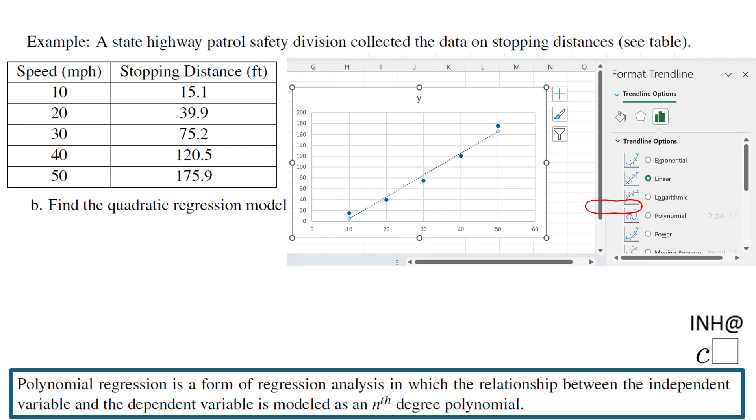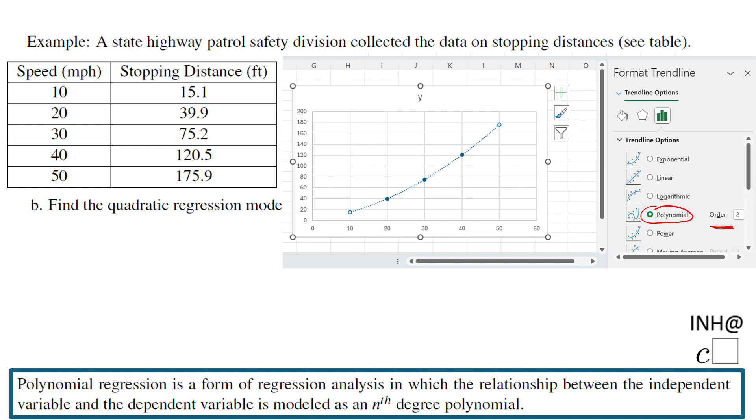Then you have these choices. By default Excel spreadsheet has the linear already picked, but you see the next one is polynomial. Like I said we're going to go polynomial, and you already see here it says an order. Once you click on the polynomial you can change the degrees. By default I have the degree two, but like I said you can do degree three, degree four and so on.